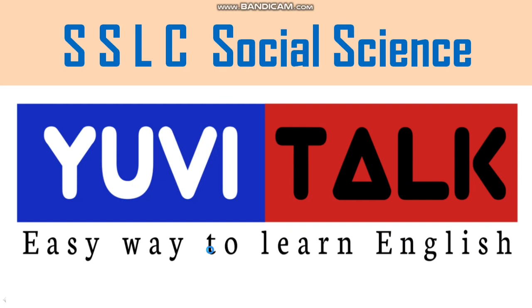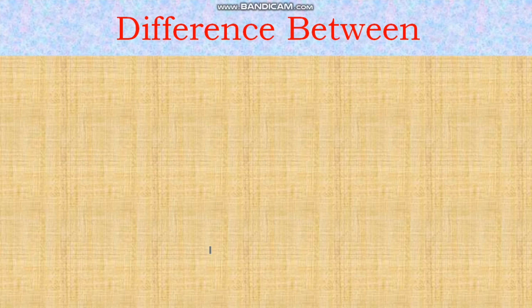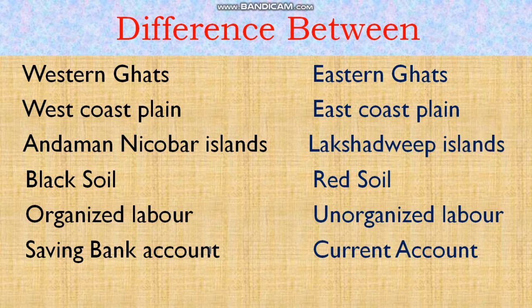Today I came with a very important concept. The topics I will discuss include: the difference between the Western Ghats and Eastern Ghats, the difference between the West Coast Plain and East Coast Plain, the difference between the Andaman-Nicobar Islands and Lakshadweep Islands, the difference between Black Soil and Red Soil, the difference between Organized and Unorganized Labor, and the difference between a Saving Bank Account and Current Account.